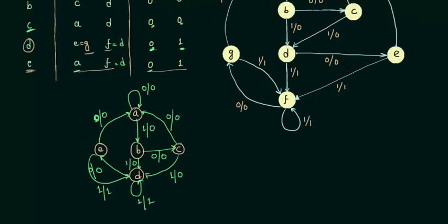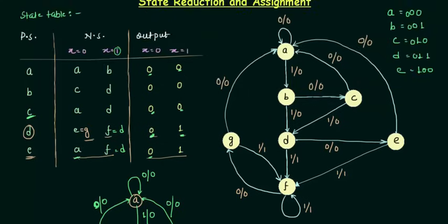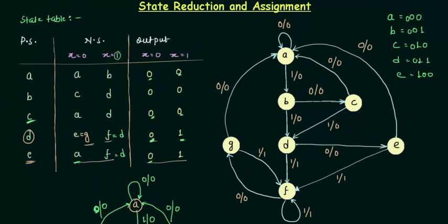This is how we do state reduction using the state table, and you already know state assignment. These are the two important topics in designing sequential circuits. Just as we used K-maps in combinational circuits to get the minimum possible result, we use state reduction here to get the minimum possible state diagram, and once we have the minimal state diagram we can have the minimal circuit.